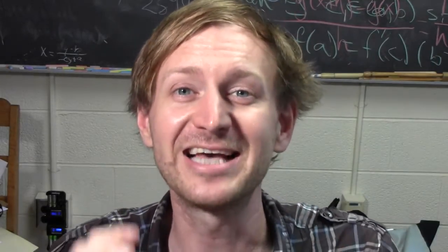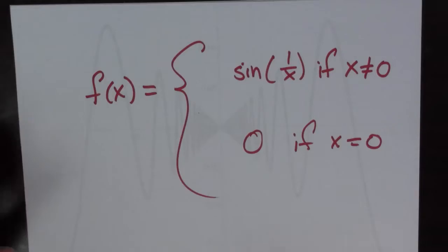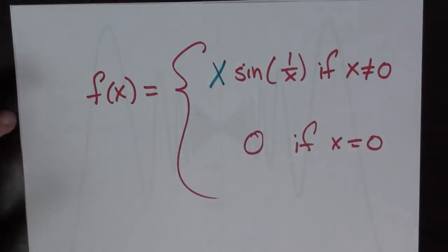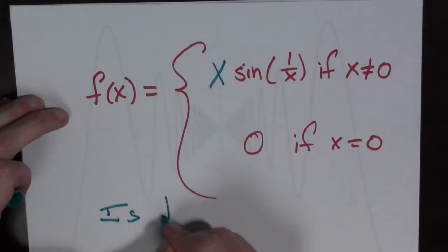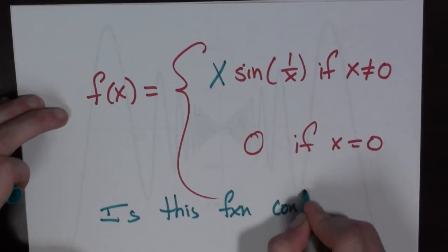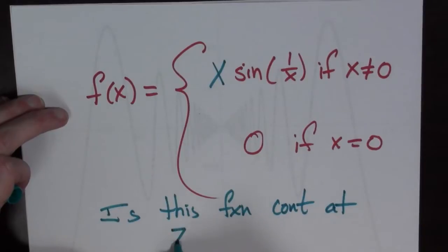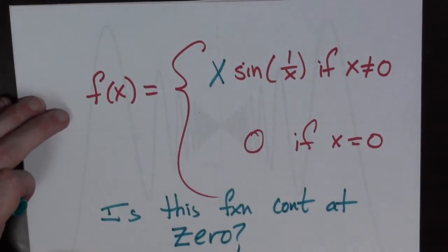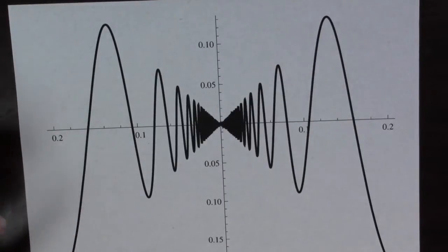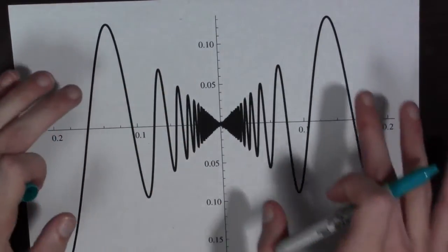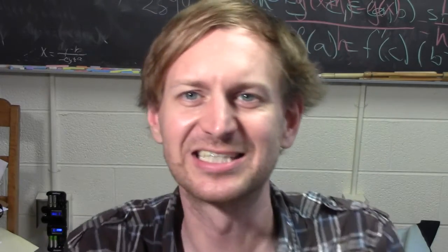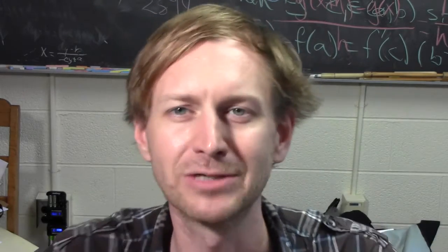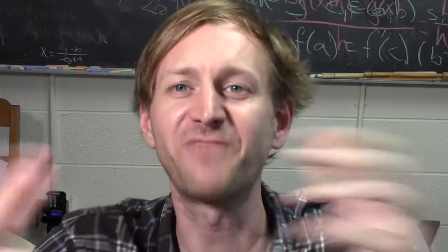However, if you take sine of 1 over x and place an x right here, then we have a very different function. We can still ask the same question: is this function — x times sine of 1 over x when x is not equal to 0, and 0 when x equals 0 — continuous at 0?